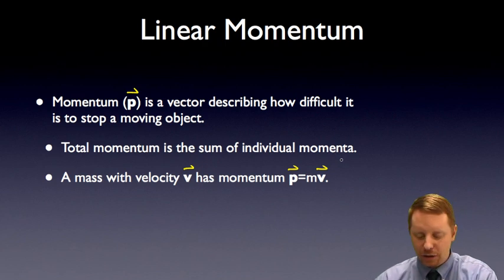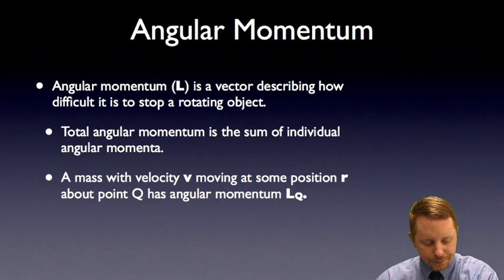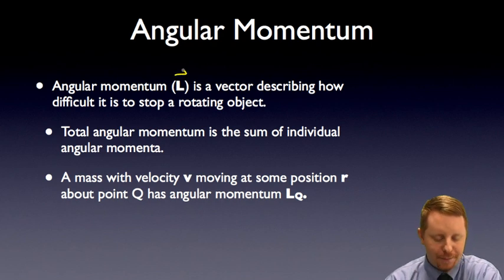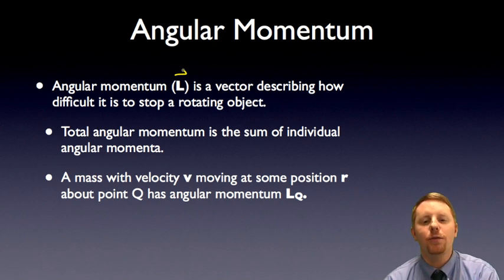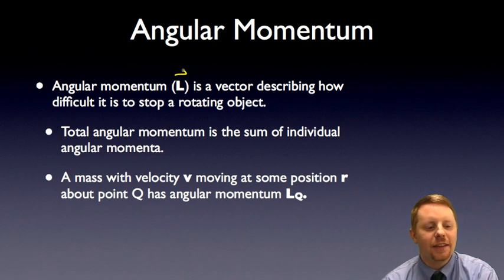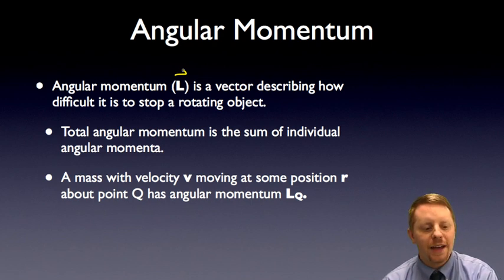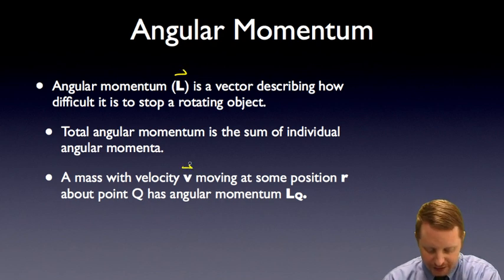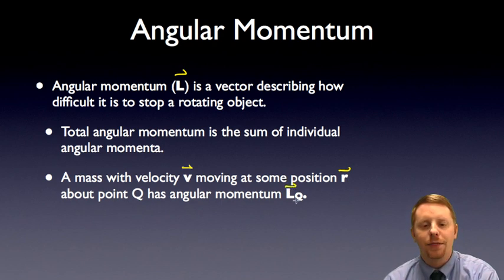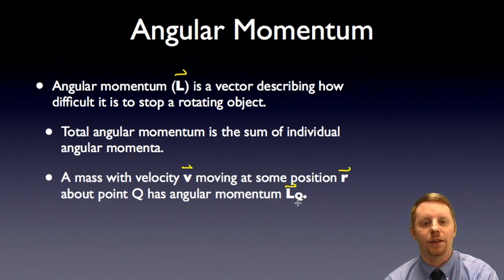Now let's talk about angular momentum, the rotational analog to this. Angular momentum, given the symbol capital L, is a vector describing how difficult it is to stop a rotating object or to change the angular velocity of a rotating object. Just like with linear momentum, the total angular momentum of a system is going to be the sum of all the individual angular momenta of the objects in that system. If we have a mass with velocity v moving at some position r about a point q, it has some angular momentum L with respect to q. The angular momentum depends on your point of origin, so we always have to reference the point we're discussing when we talk about angular momentum.